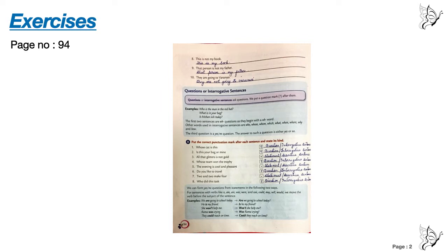Number three: All that glitters is not gold. This is a statement — give a full stop and write statement or assertive sentence. Number four: Whose team won the trophy? Question mark — interrogative sentence. Number five: The evening is cool and pleasant. Full stop — statement, assertive sentence.